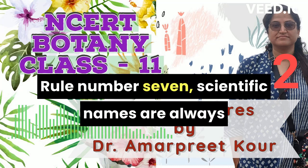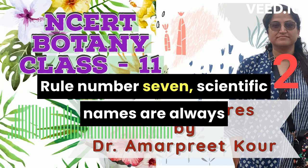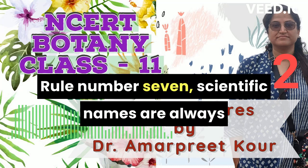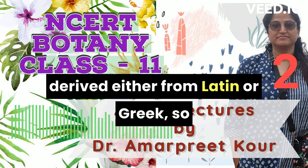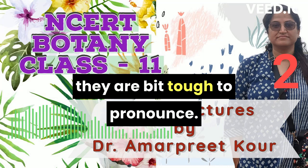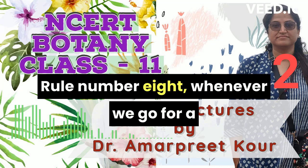Rule number seven: scientific names are always derived either from Latin or Greek, so they are a bit tough to pronounce.